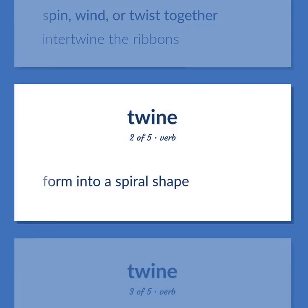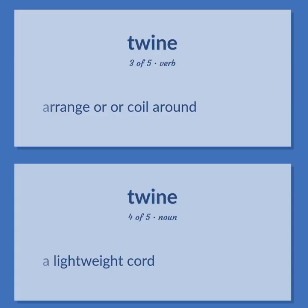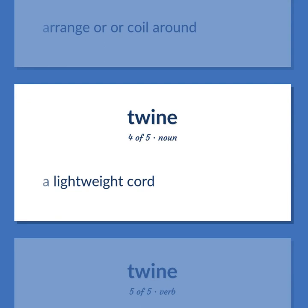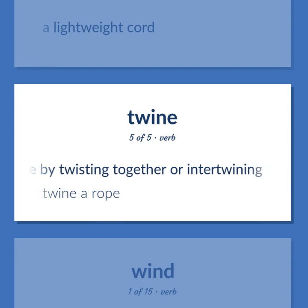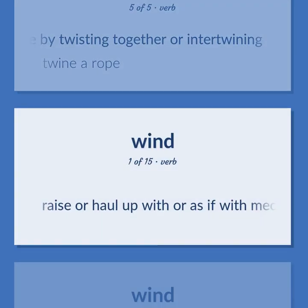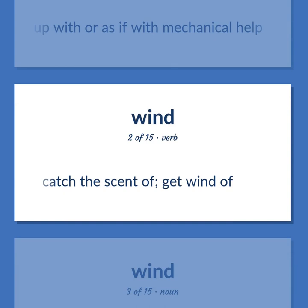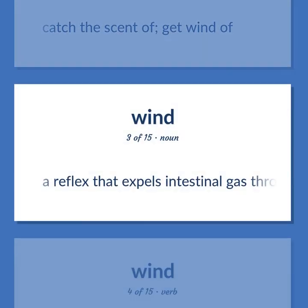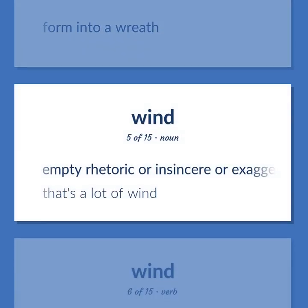TWINE: Form into a spiral shape. Arrange or coil around. A lightweight cord. Make by twisting together or intertwining — 'Twine a rope.' Raise or haul up with or as if with mechanical help. Catch the scent of; get wind of. A reflex that expels intestinal gas through the anus. Form into a wreath.